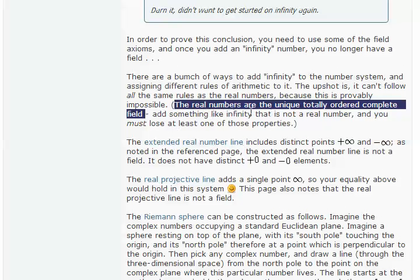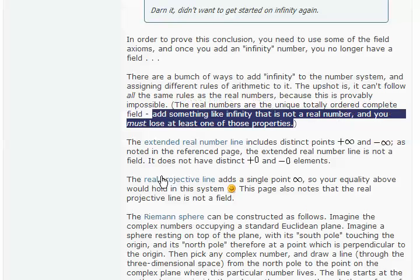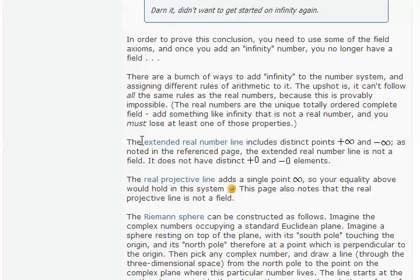Spalekanth goes on to say that the real numbers are the unique totally ordered complete field. Add something like infinity that is not a real number and you must lose at least one of those properties. So I think that's a strange claim to claim that the extended real number line includes distinct points positive infinity and negative infinity